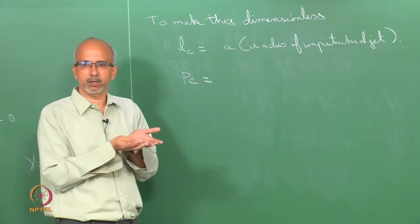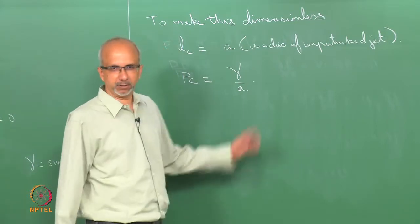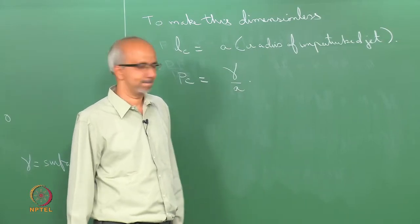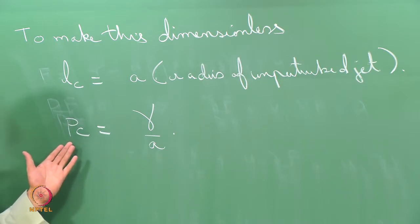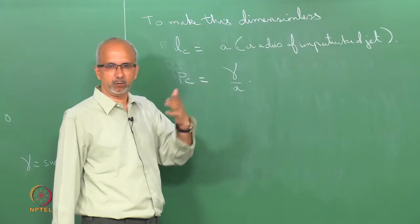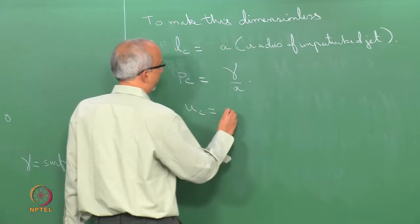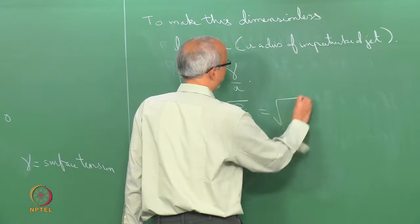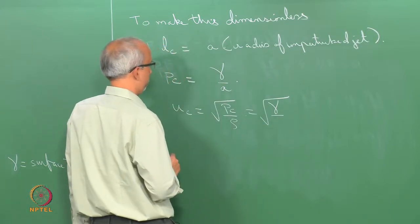If we have a cylindrical jet of radius A, the characteristic pressure is gamma/A — a fixed, known quantity. Once the characteristic pressure is known, the characteristic velocity can be found since pressure scales as rho·U². So U_c = sqrt(gamma / (A·rho)). This makes sense because we are looking at a stationary jet — there is no imposed velocity. The velocity is induced by surface tension, which is why the characteristic velocity involves surface tension.